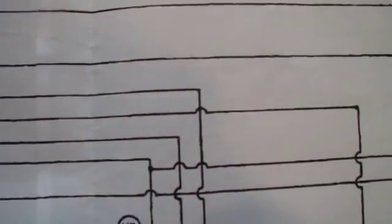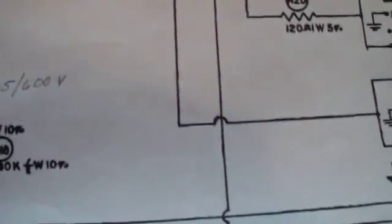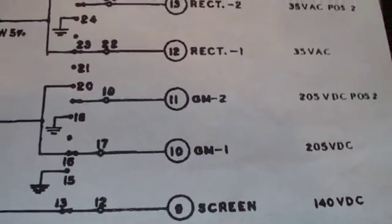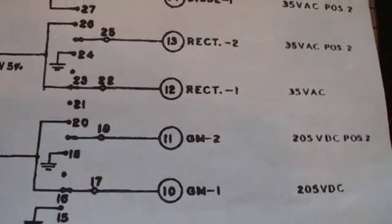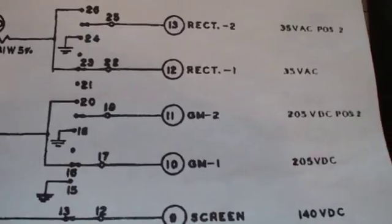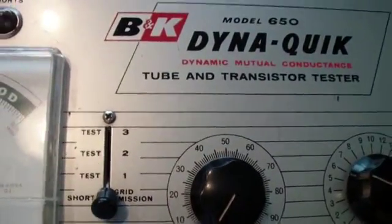Actually, it comes off of the center tap right there of the filament transformer and eventually winds up over here as GM1 and GM2. GM, of course, is the universal symbol for mutual conductance. And 1 and 2 refer to whether it's position 1 on this switch or position 2.